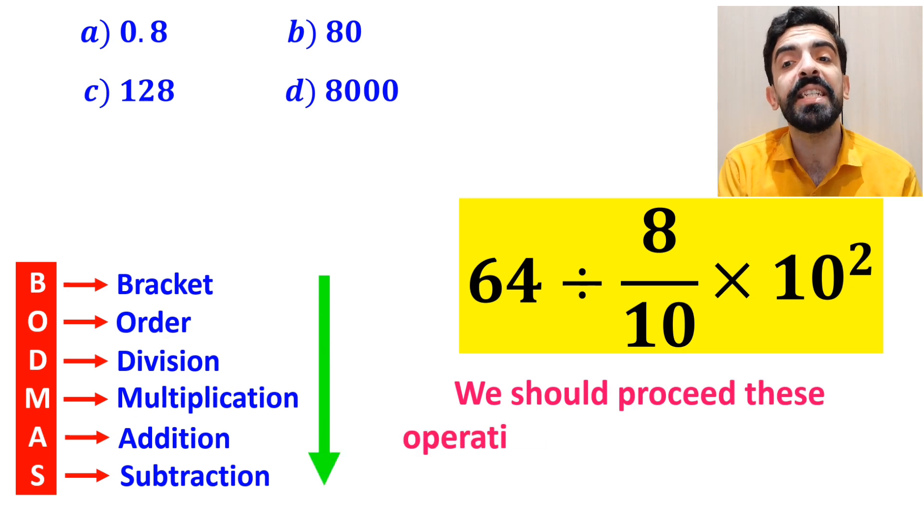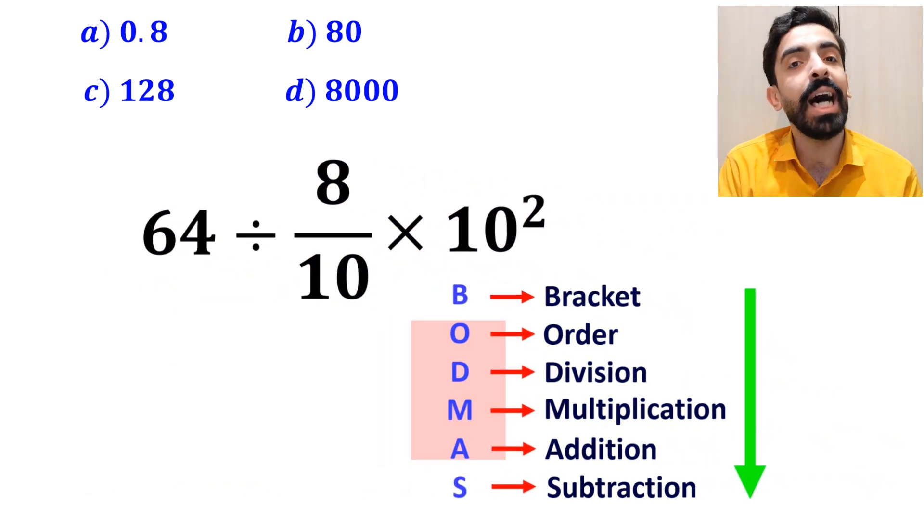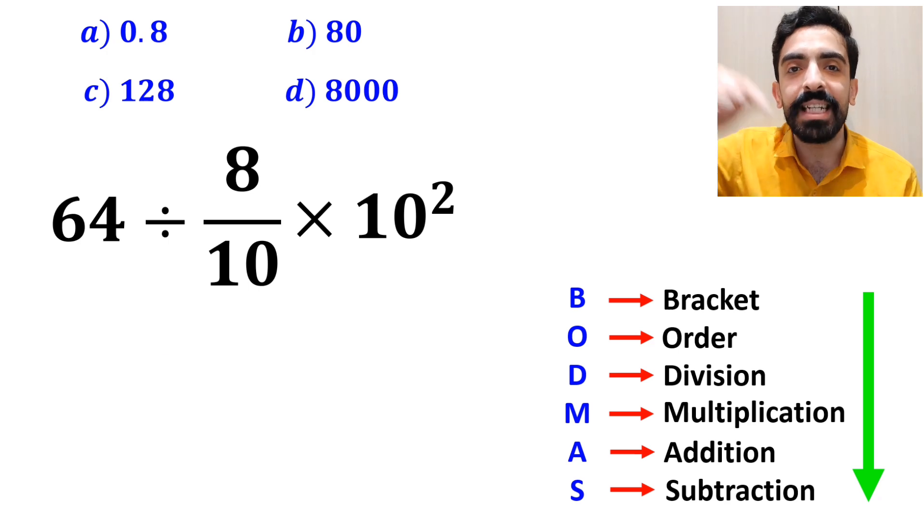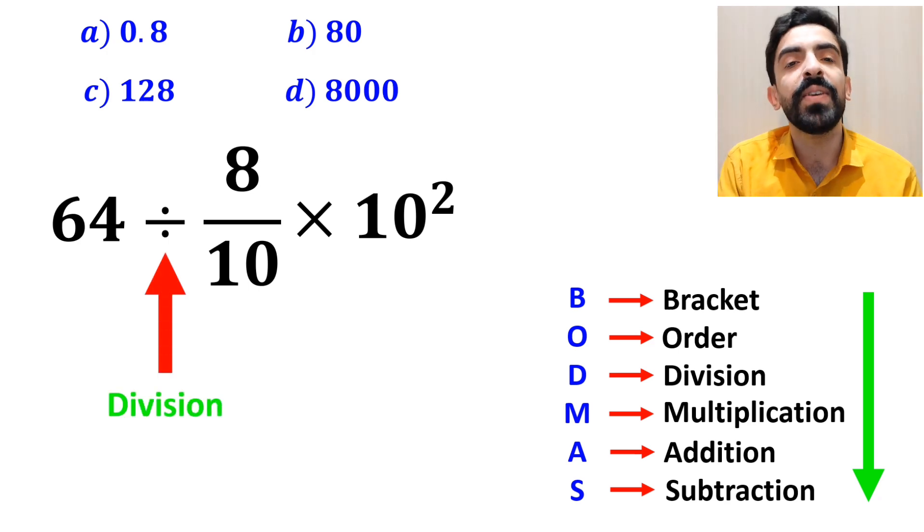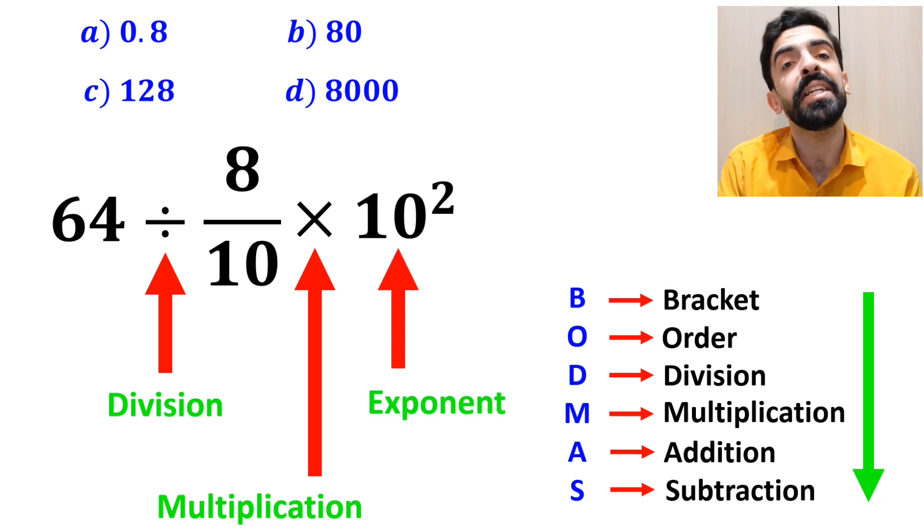We should proceed these operations exactly as written from top to bottom step by step. As you can see on the screen, in this expression, first we have a division sign, then a multiplication sign, and finally exponent.